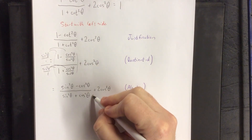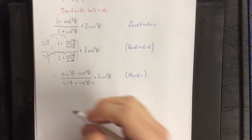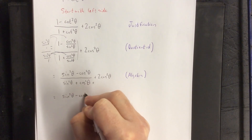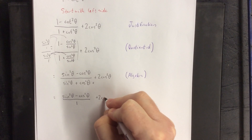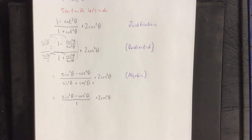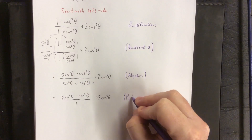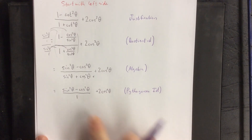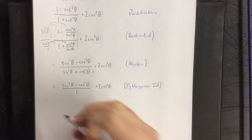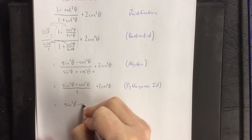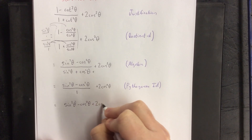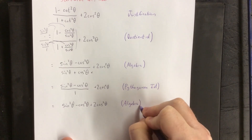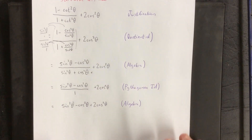In the denominator we now have sine squared of theta plus cosine squared of theta, which is a very easily identifiable Pythagorean identity equal to 1. Dividing by 1 doesn't change the value of anything, so we can write this as sine squared of theta minus cosine squared of theta plus 2 times cosine squared of theta. The justification: the Pythagorean identity gives us 1 in the denominator, and division by the multiplicative identity is just algebra.